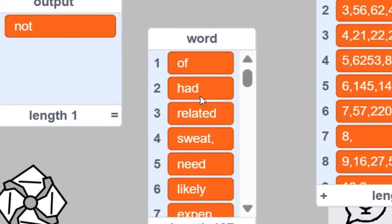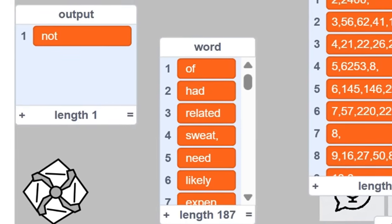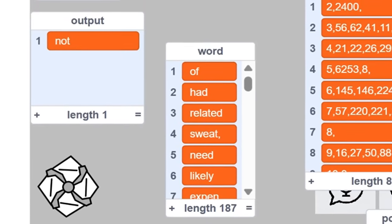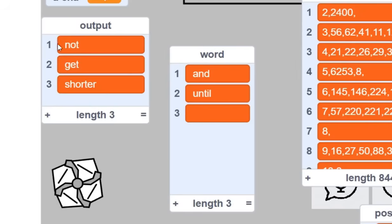So not of, or not had, or not related, or not sweet. And so then we can either randomly pick one of these words, or we can pick it off of certain rules. So let's just let the AI pick one of these words. So it picked the word not, and then it picked the word get, and then now the word is shorter.